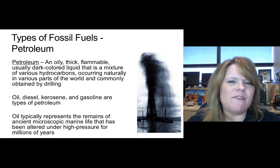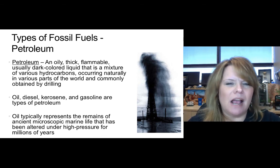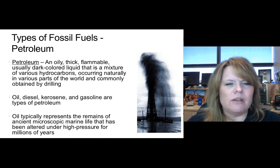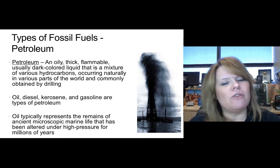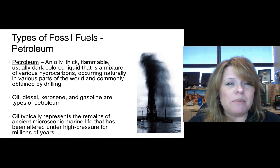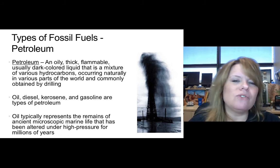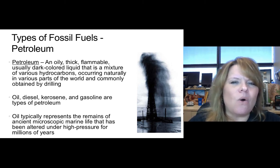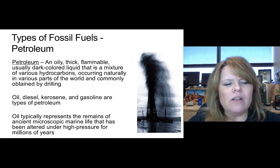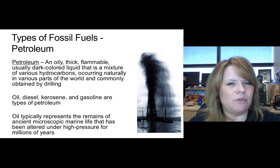Let's start with petroleum and talk about how it is made and where it comes from. Petroleum is any oily, thick, flammable, usually dark-colored liquid that is a mixture of various hydrocarbons — and hydrocarbons are the fossil fuel part. These occur naturally in various parts of the world and are commonly obtained by drilling subsurface. However, this material can ooze up to the surface when there are fractures in the ground, usually caused by salt domes underground from ancient rock layers. Oil, diesel, kerosene, and gasoline are all types of petroleum.